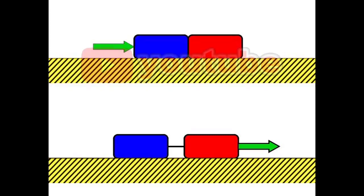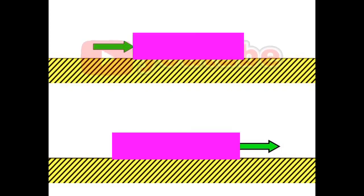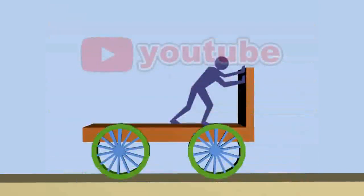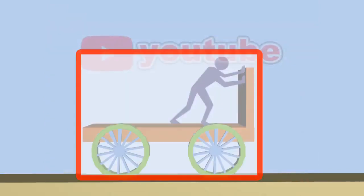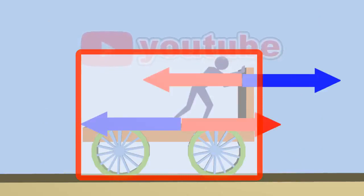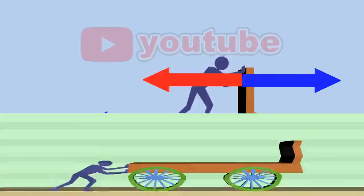We can express the answer better using this important tip: connected objects can be considered as one object. Therefore, because the man and chariot are fixed to each other, we consider them as one object. Because all forces are applied to one object, they cancel each other out and the chariot does not move.